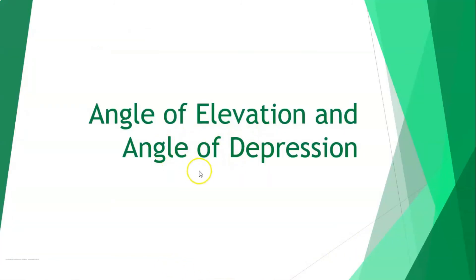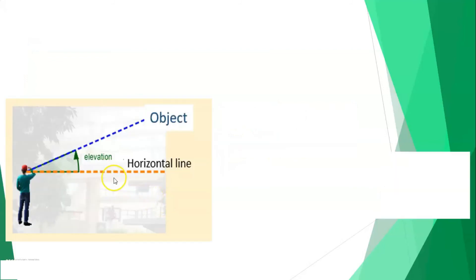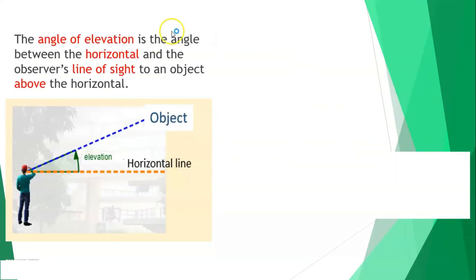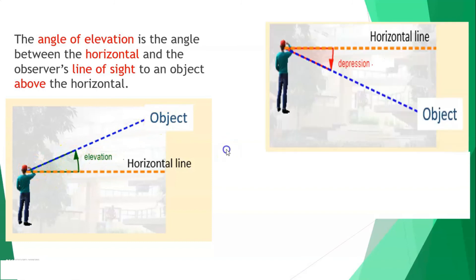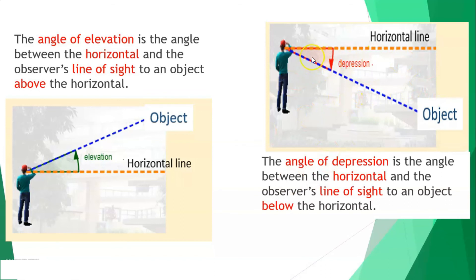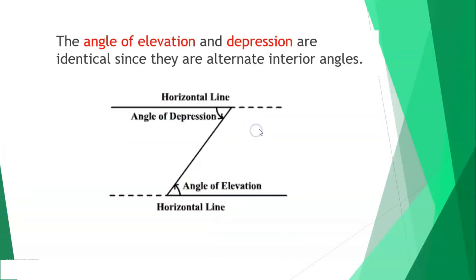The angle of elevation is the angle between the horizontal line and the observer's line of sight toward an object above the horizontal. The angle of depression is the angle between the horizontal line and the observer's line of sight toward an object below the horizontal. The angle of elevation and angle of depression are equal since they are alternate interior angles.